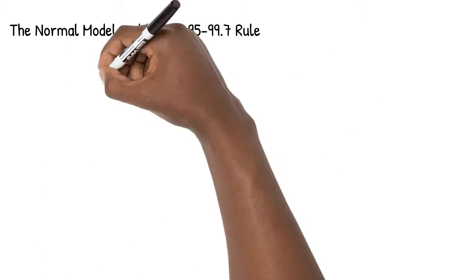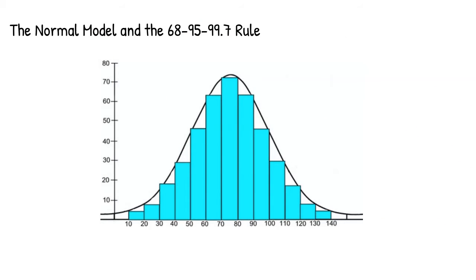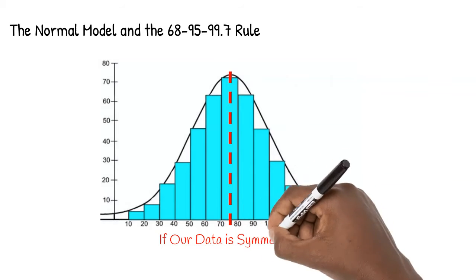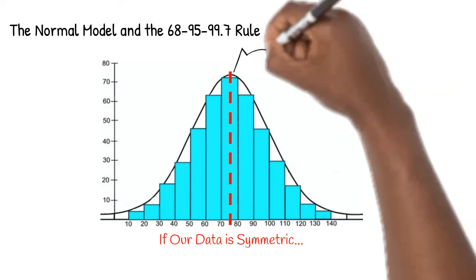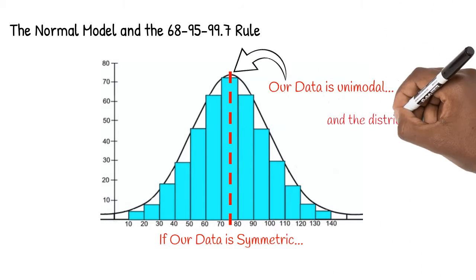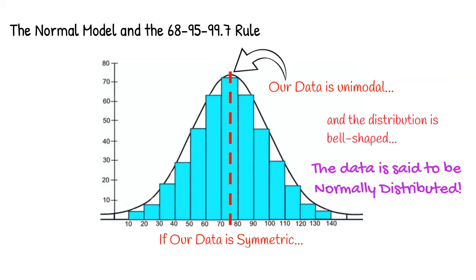Let's say we make a histogram using given data. If our data is symmetric, unimodal, and the distribution is bell-shaped, the data is said to be normally distributed.